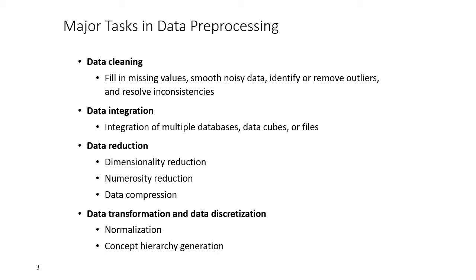Then there is data reduction. Dimensionality reduction means grouping data at a higher level — for example, instead of storing city, lane area, and lane separately, we group data at the state level, reducing the dimensionality. Numerosity reduction means mapping data to a smaller range — for instance, mapping marks from 0–100 into the range 0–10 reduces numerosity. Data compression reduces the size of data by mapping it to certain other values.